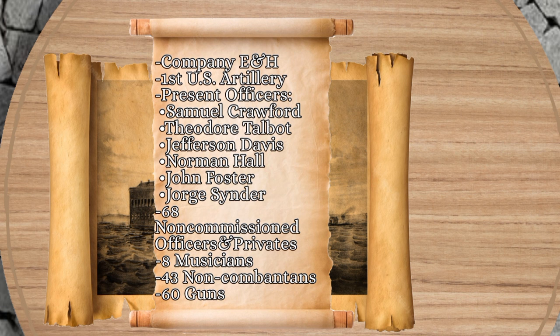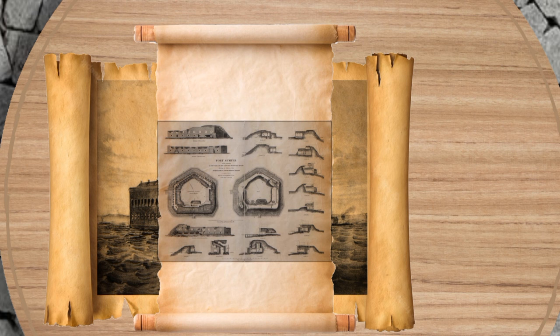Other officers present included Surgeon Samuel Crawford, First Lieutenant Theodore Talbot, First Lieutenant Jefferson Davis of the First U.S. Artillery, and Second Lieutenant Norman Hall. Captain John Foster and First Lieutenant George Snyder of the Corps of Engineers were responsible for fort construction but reported to Washington, not Anderson. The remaining personnel were 68 non-commissioned officers and privates, eight musicians, and 43 non-combatant workmen. By April, the union troops had positioned 60 guns but had insufficient men to operate them all.